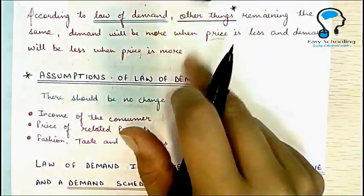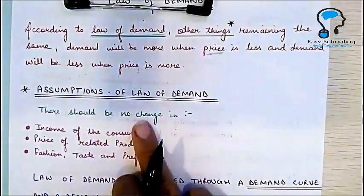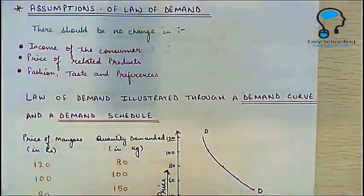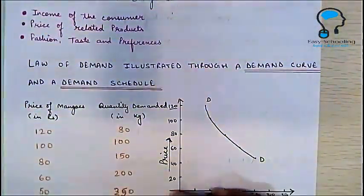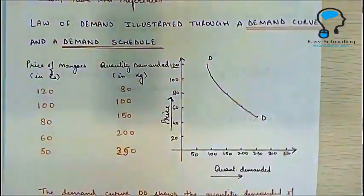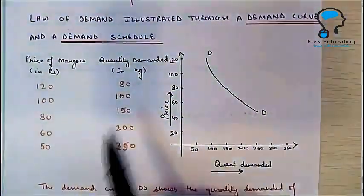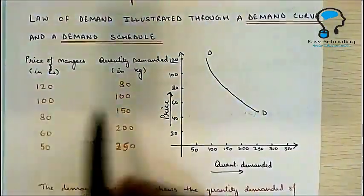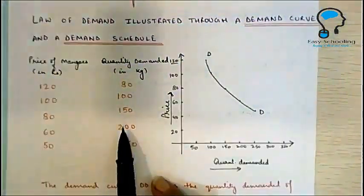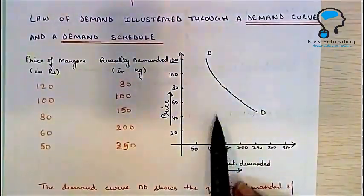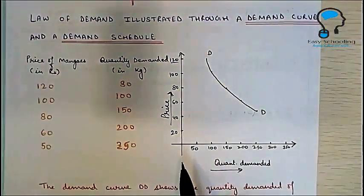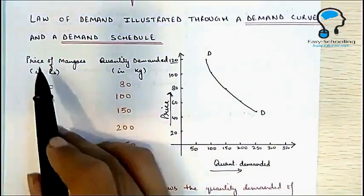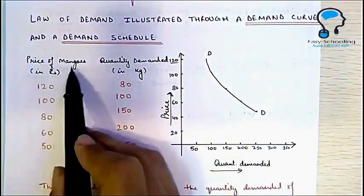So this is what you have to write when the Law of Demand is asked: first, the definition of the Law of Demand, then the assumptions, and after that you need to illustrate the Law of Demand with the help of a demand curve and a demand schedule. A demand schedule is a tabular representation of price and quantity demanded of any commodity.